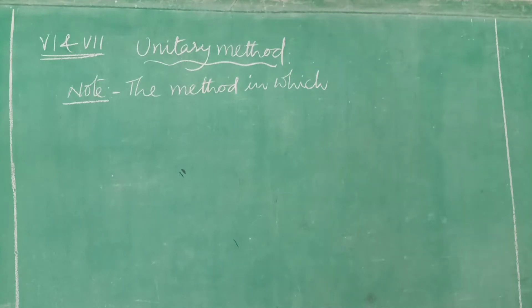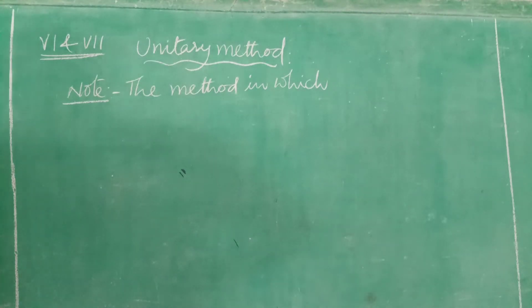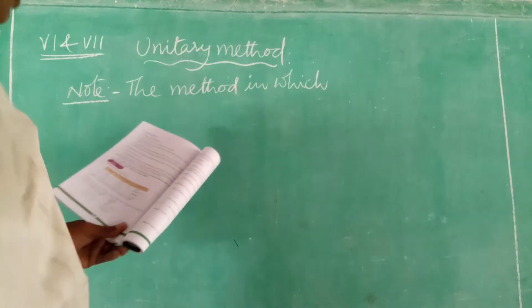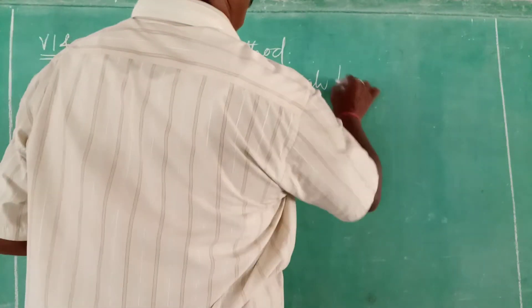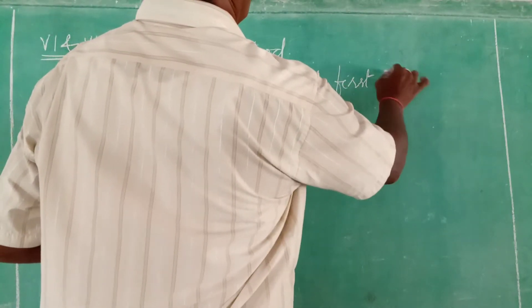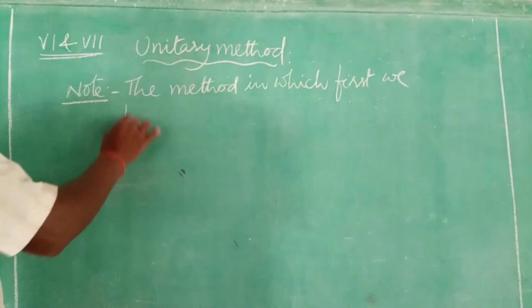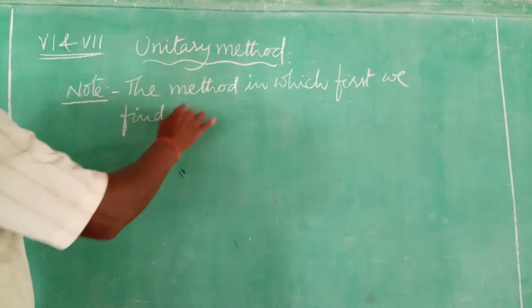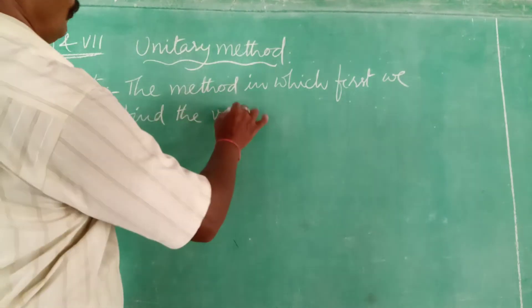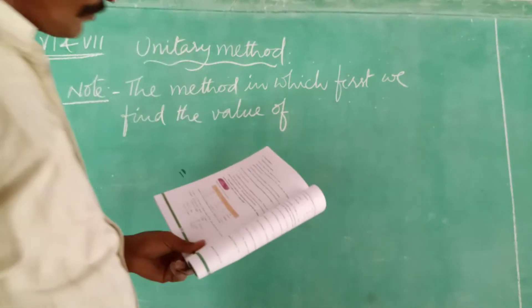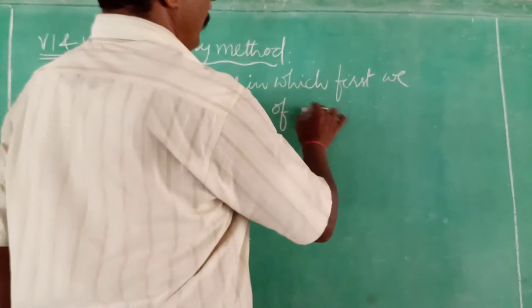Good morning. Unitary method. Definition: The method in which first we find the value of one unit,